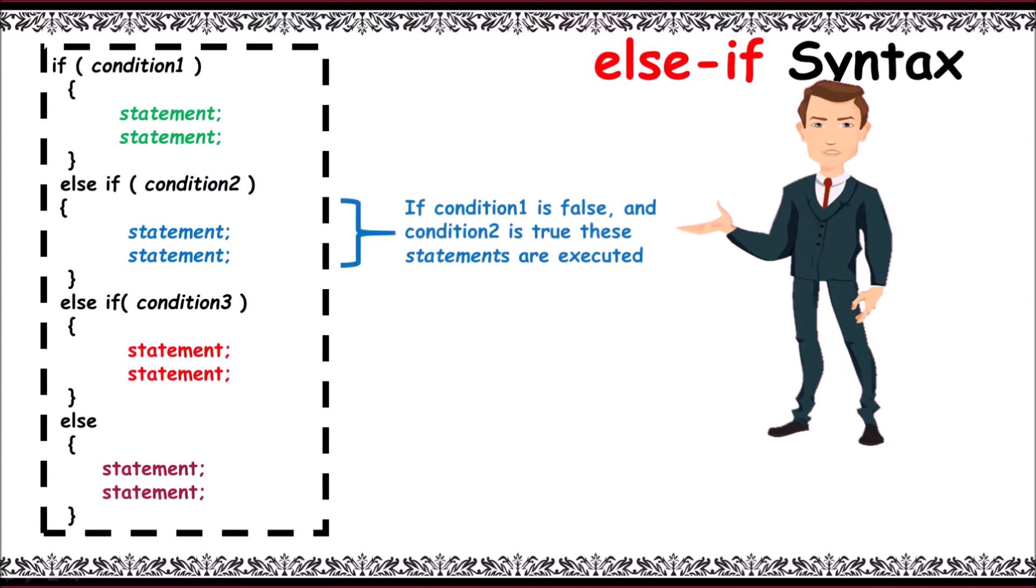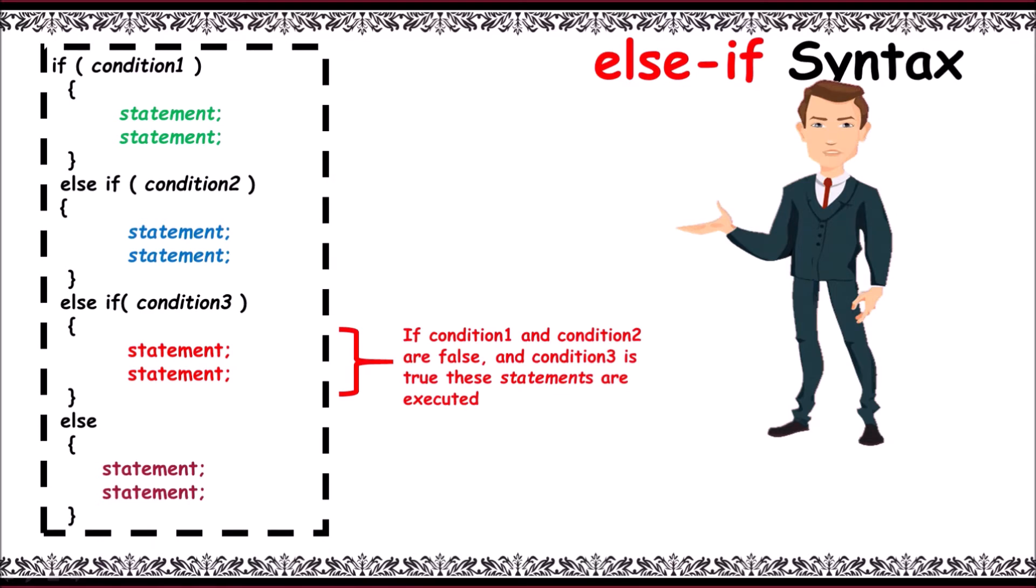false and control verifies condition two, if it's true these set of statements gets executed. Point number three: if condition one and condition two both are false and condition three is true, these set of statements gets executed. Now finally,